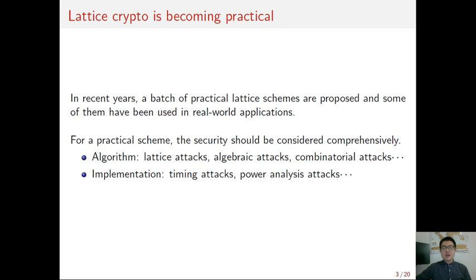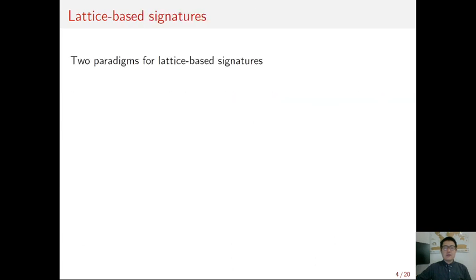When it comes to side-channel attacks, lattice signatures is an important subject. There are two main paradigms for lattice-based signatures. The first one is hash-and-sign. The earliest lattice signatures GGH and NTRU-Sign are in this family. But these two schemes were broken by statistical learning attacks. Later, the famous GPV paper proposed a secure framework for lattice hash-and-sign scheme. And then, the GPV scheme is developed as some practical instantiations such as FALCON and DLP.